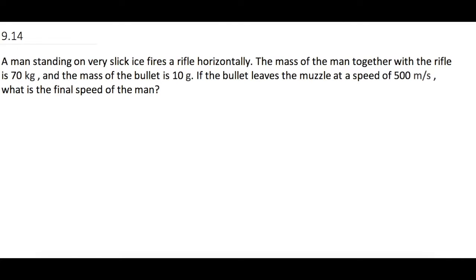A man on very slick ice fires a rifle horizontally. The mass of the man together with the rifle is 70 kilograms and the mass of the bullet is 10 grams. If the bullet leaves the muzzle at a speed of 500 meters per second, what is the final speed of the man?